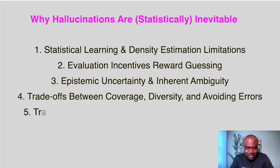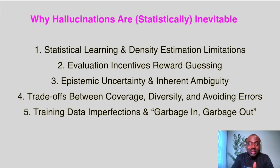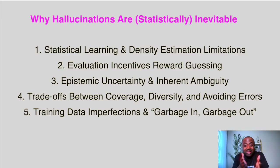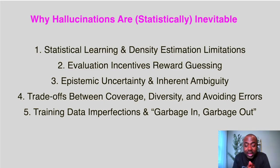And finally, training data is imperfect — garbage in, garbage out. When people write LinkedIn articles or Wikipedia entries, they are not thinking about someone using that content to train a language model. The data itself contains factual errors, so the responses the LLM produces will also be factually wrong. The model is only learning from the data provided to it — that's just what it is.